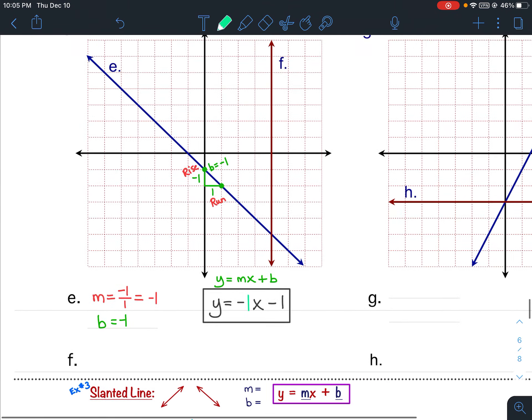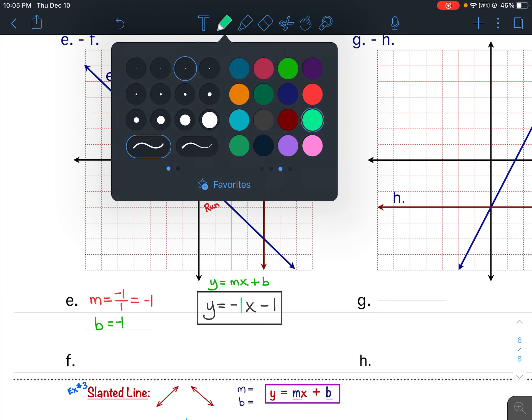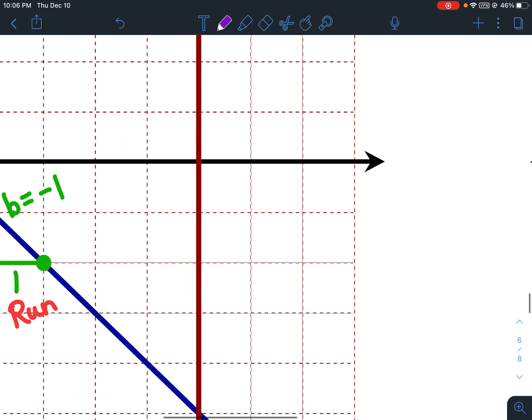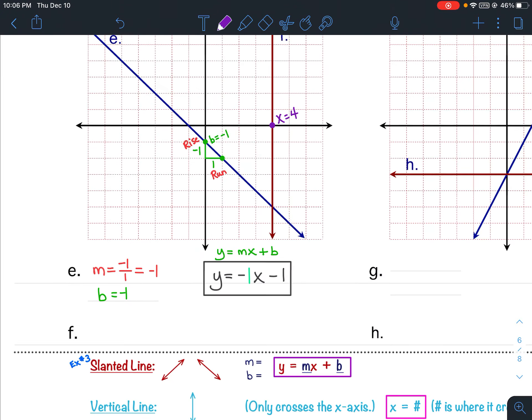Alright, so let's look at f. f is a vertical line. Vertical lines only cross the x-axis. So, it crosses the x-axis at this point. What is that point? Well, let's count. 1, 2, 3, 4. So, x equals 4. And that is your equation. x equals 4.